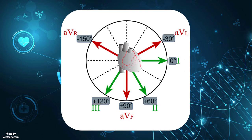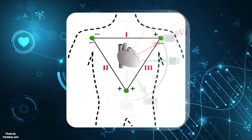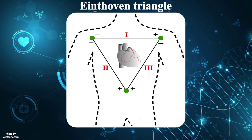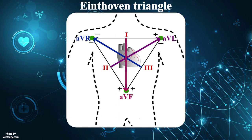To better memorize the limb lead system, keep this diagram in mind. The bipolar leads form a triangle known as the Einthoven Triangle. Additionally, the augmented leads are perpendicular to the bipolar leads.